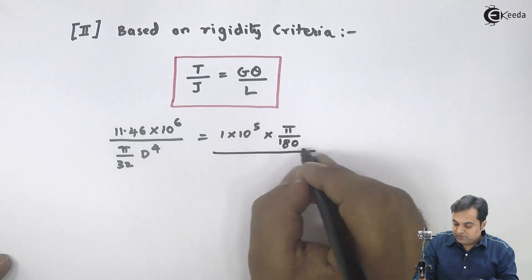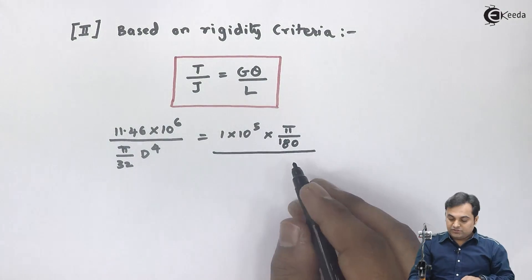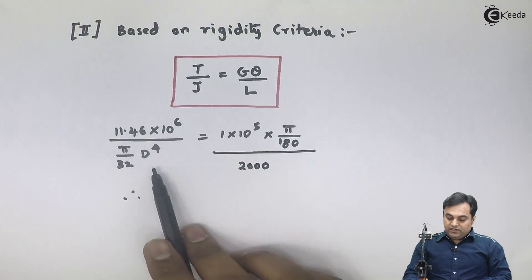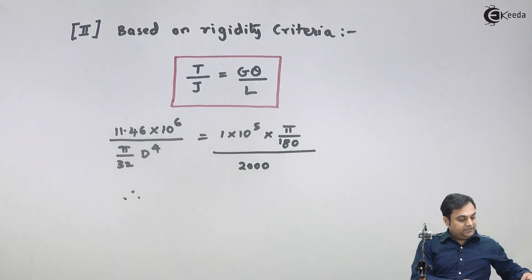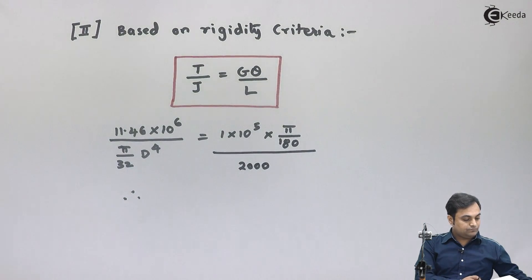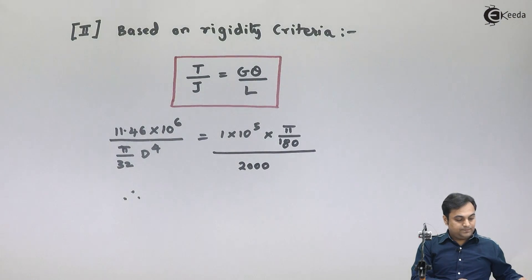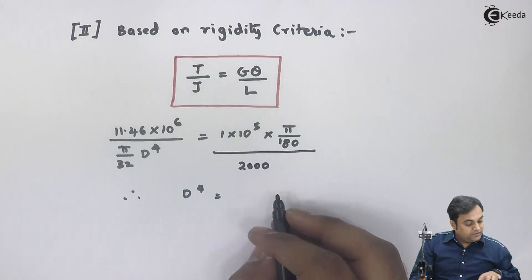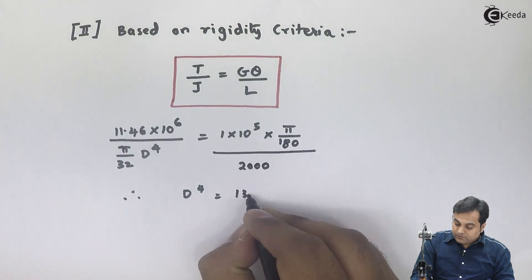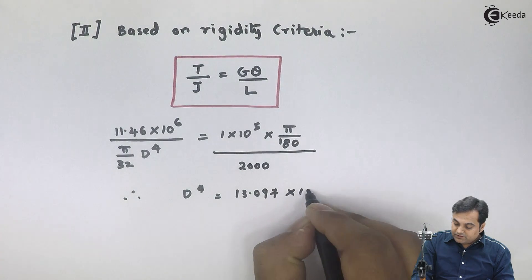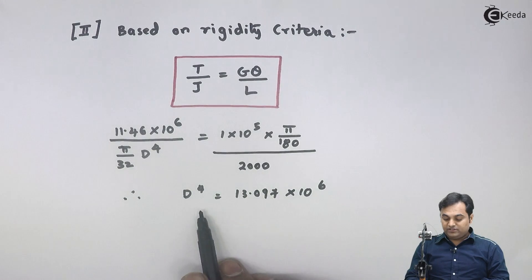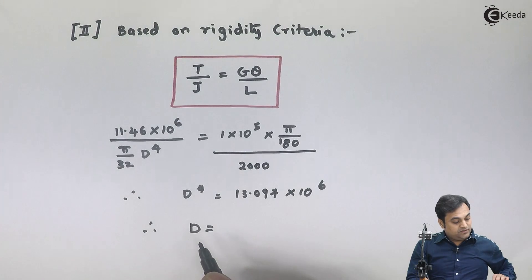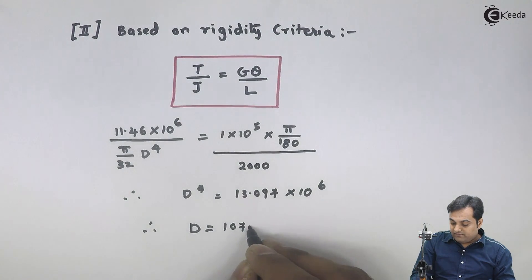Dividing by the length of the shaft which is 2000 mm, and calculating all terms, d⁴ comes out to be 13.097×10⁶. Taking the square root twice, d equals 107.5 mm. I will call this equation number two.